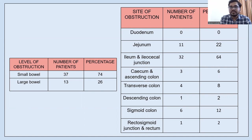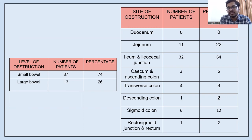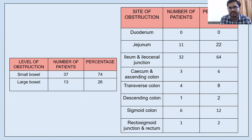Regarding site of obstruction, none of the patients had duodenum as the site of obstruction. 11 patients had the jejunum as the site. Ileum and ileosigmoid junction was the site in 32 patients. Cecum and ascending colon in 3, transverse colon in 4, descending colon in 1, sigmoid colon in 6, and rectosigmoid junction and rectum in 1 patient respectively.